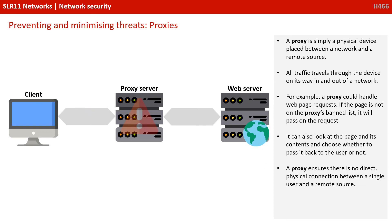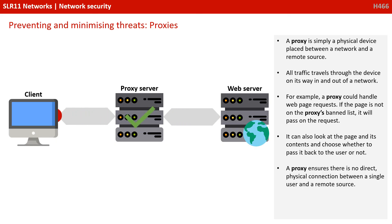A proxy is simply a physical device placed between a network and a remote source. All traffic travels through the device on its way in and out of a network. For example, a proxy could handle web page requests. If the page is not on the proxy's banned list, it will pass on the request. It can also look at the page and its contents and choose whether to pass it back to the user or not. A proxy ensures there is no direct physical connection between a single user and a remote source.